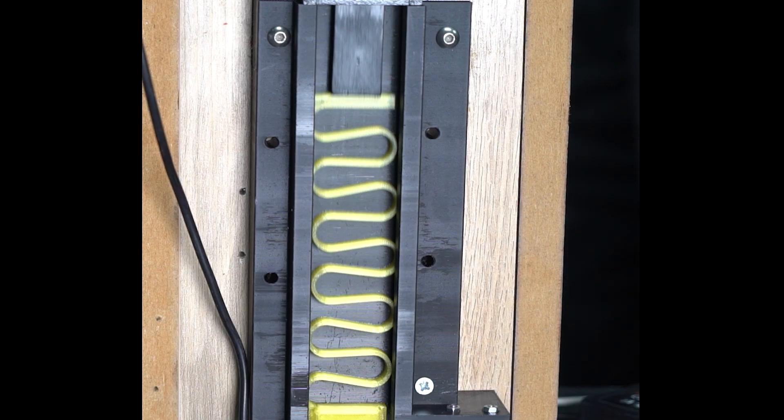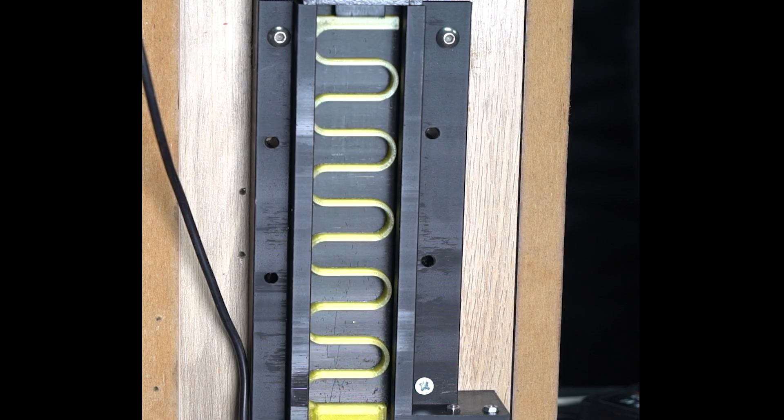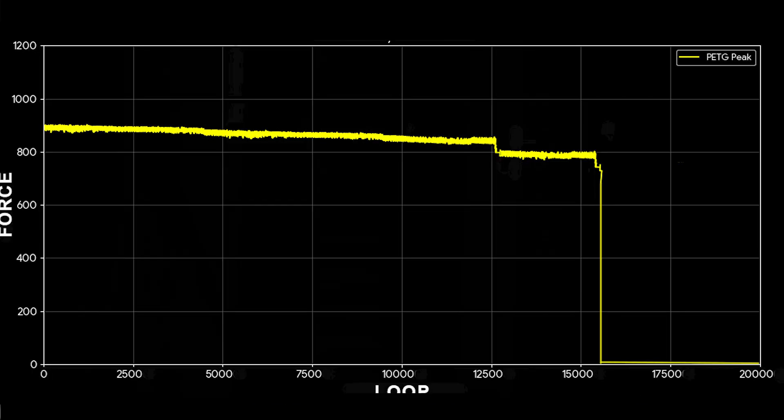Next up, PETG. It started with 890 kilograms. With a smooth stretch, it passed 13,000 loops. Only then, a small crack. But look at the endurance. It carried the burden until loop 15,780. It finished with 780 kilograms. It lost only 12% of its power. It got tired just like ABS, but it lived twice as long.